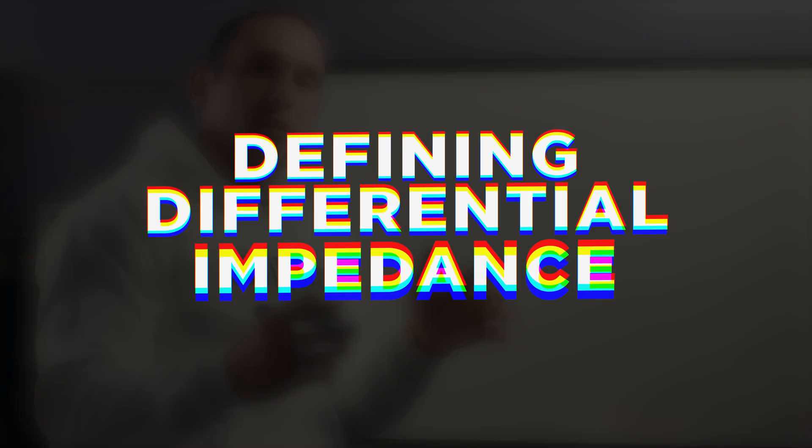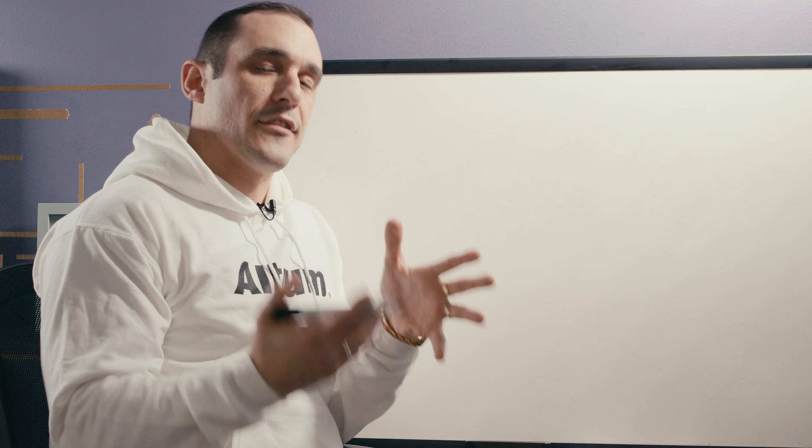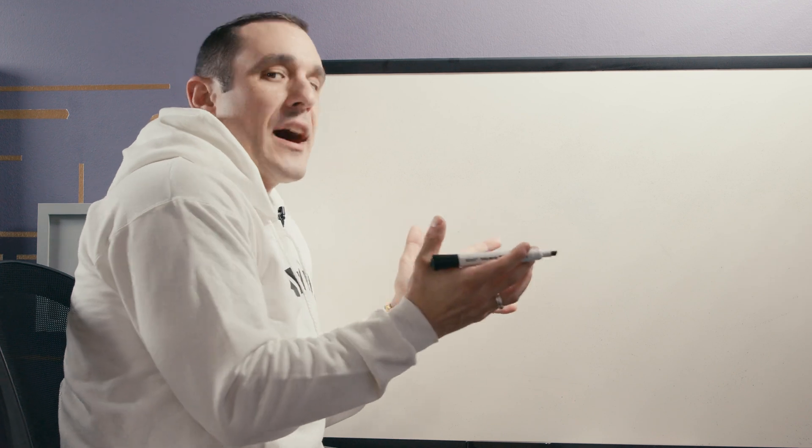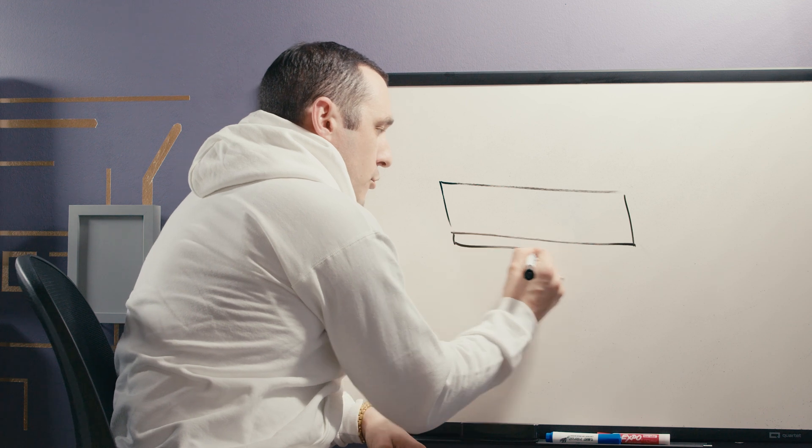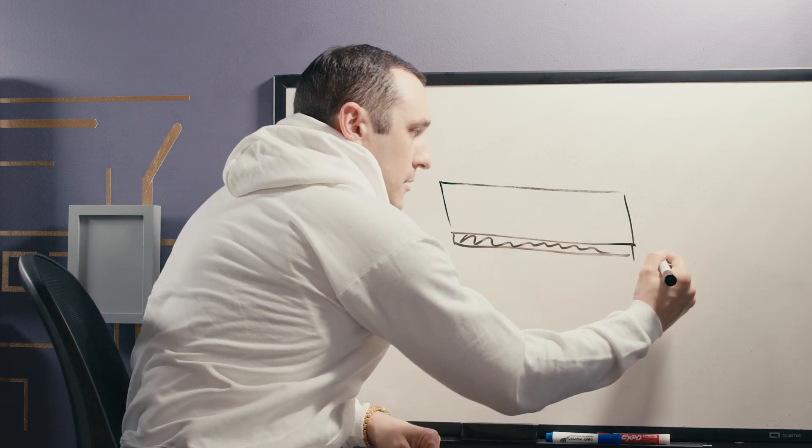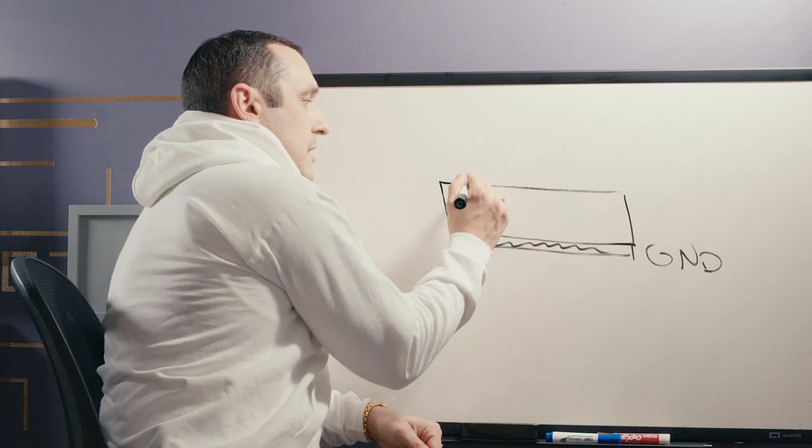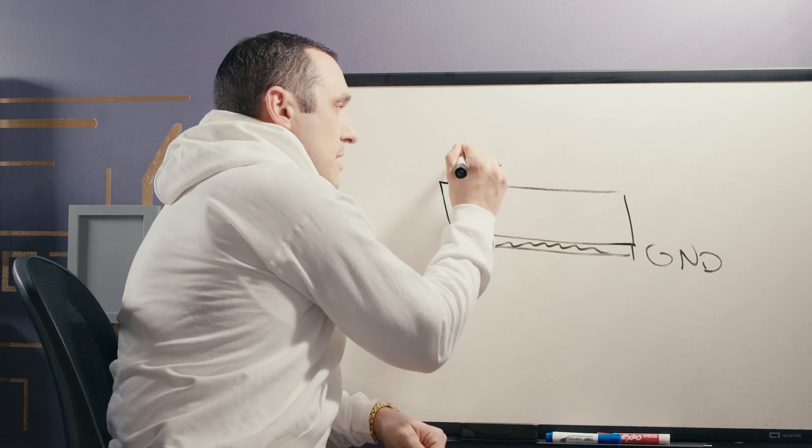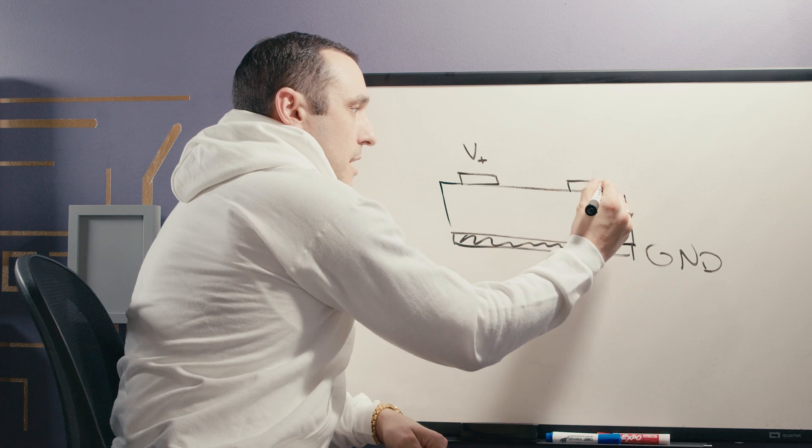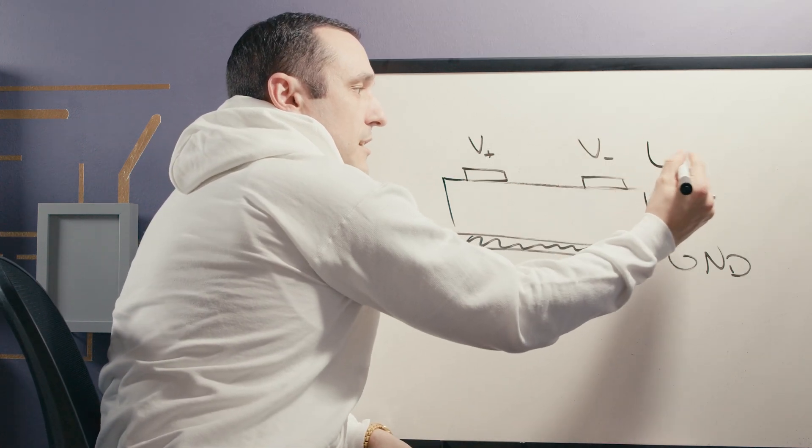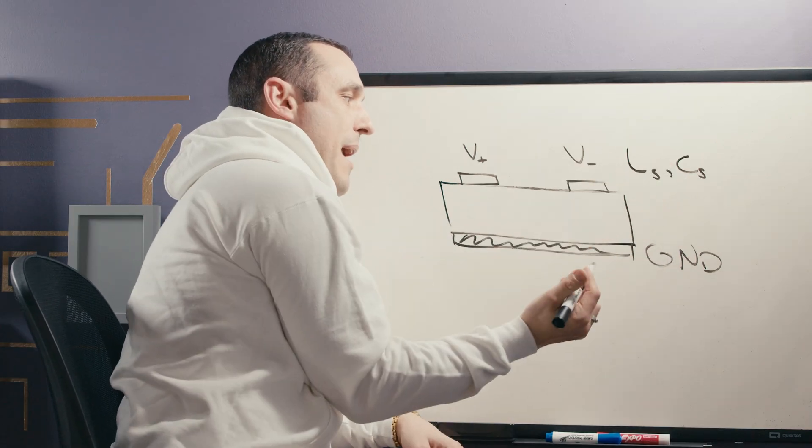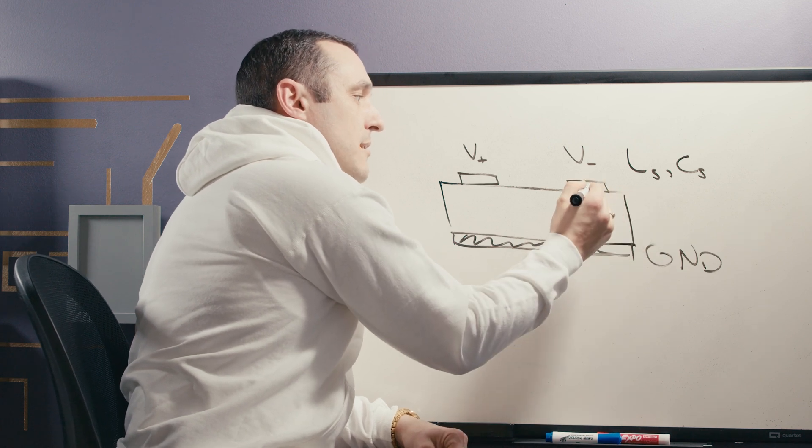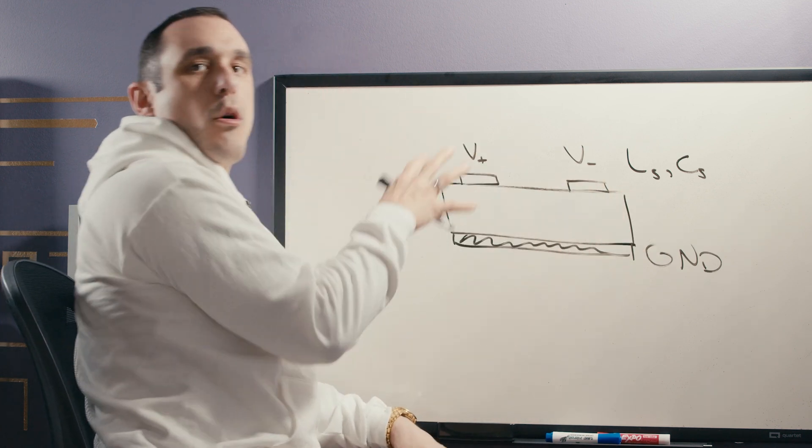So to answer the question of whether or not we absolutely need ground very close to differential pairs in order for a differential interface to function, let's take a look at what defines differential impedance. Now if I have a PCB and I have a ground plane on the next layer, I'll call this ground, and here up top we have some differential microstrips, this is my positive polarity signal and this is my negative polarity signal, there's going to be some self-inductance and self-capacitance for each of these traces.